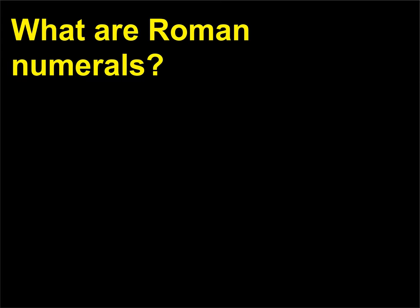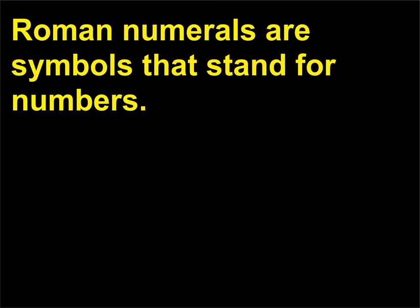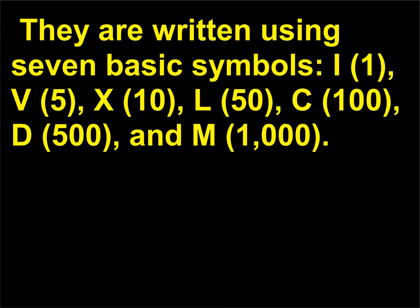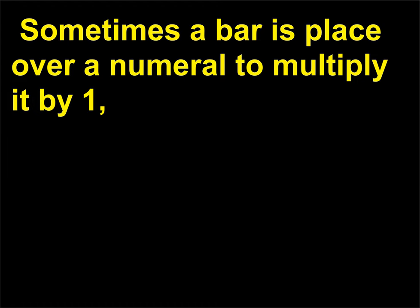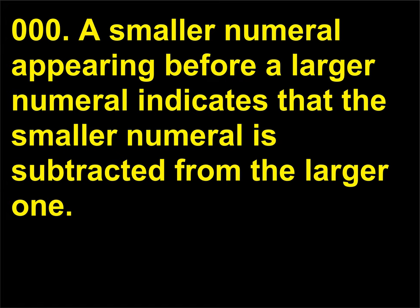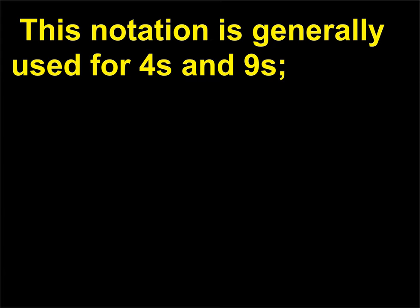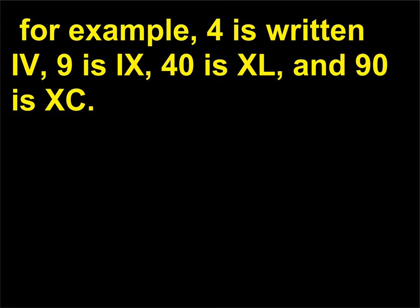What are Roman numerals? Roman numerals are symbols that stand for numbers. They are written using seven basic symbols: I (1), V (5), X (10), L (50), C (100), D (500), and M (1000). Sometimes a bar is placed over a numeral to multiply it by 1,000. A smaller numeral appearing before a larger numeral indicates that the smaller numeral is subtracted from the larger — this notation is generally used for 4s and 9s. For example, 4 is written IV, 9 is IX, 40 is XL, and 90 is XC.